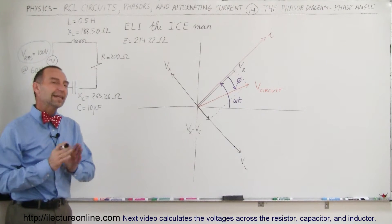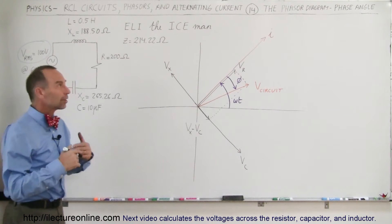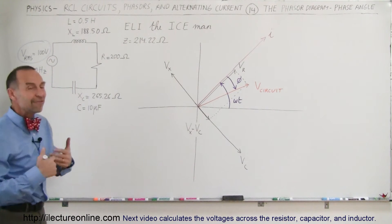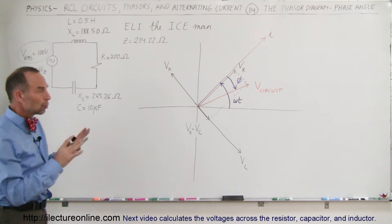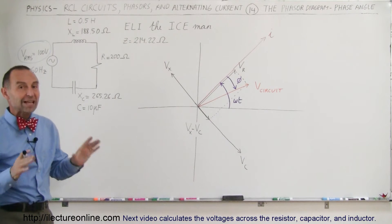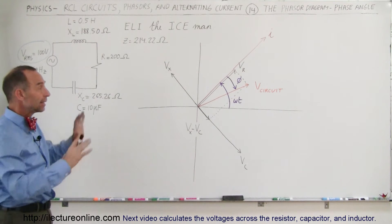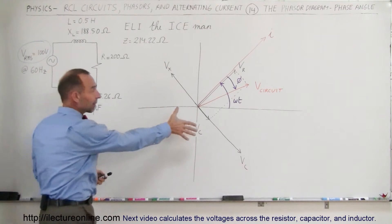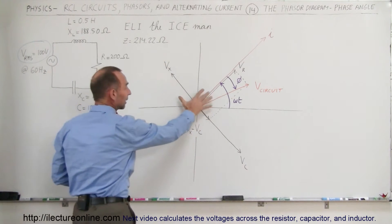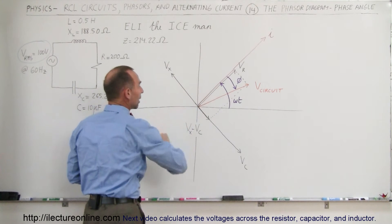Welcome to Electron Line, and here we're going to take another look at the phase angle. We're going to do this relative to a phase diagram. Here we have a phase diagram. Phase diagrams rotate like this — counterclockwise.